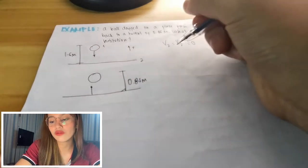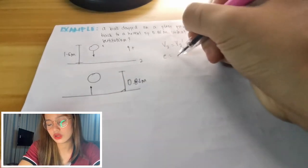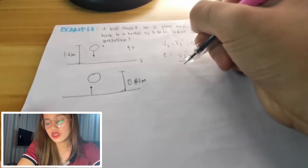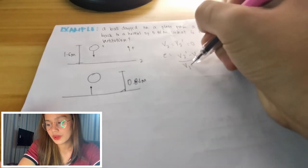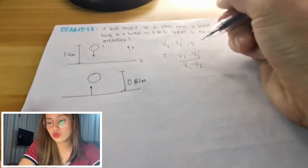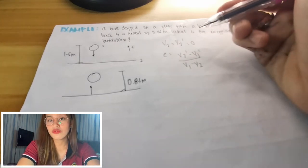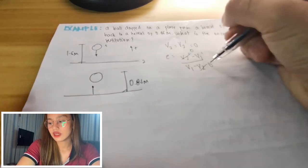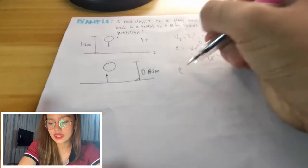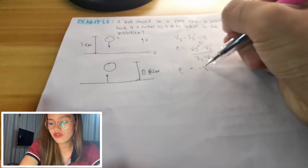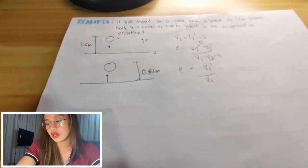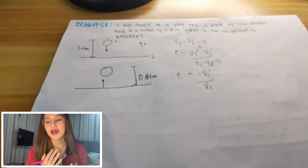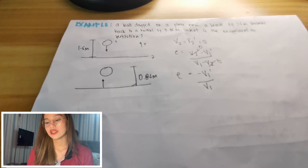So our formula for coefficient of restitution is equal to v₂ prime minus v₁ prime over v₁ minus v₂. So since v₂ prime is zero, we can cancel them out. And what remains is negative v₁ prime over v₁. So how do we find the coefficient of restitution?